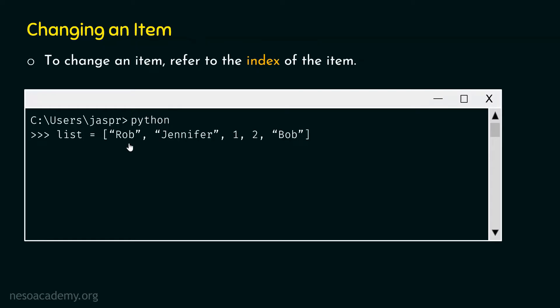After activating the Python interactive shell, let's type this command: list equal to Rob, Jennifer, 1, 2, and Bob. Let's say that we have this list with a total of five items. Now let's say that we want to replace this integer by a string.